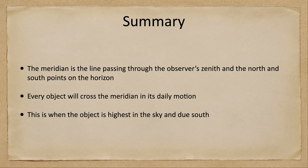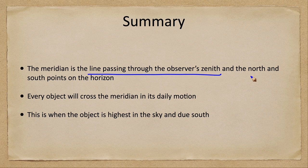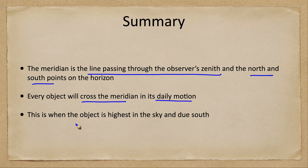In summary, the meridian is the line that passes through the observer's zenith as well as the north and south points on the horizon. Every object is going to cross the meridian as part of its daily motion, and that occurs when the object is highest in the sky and due south.